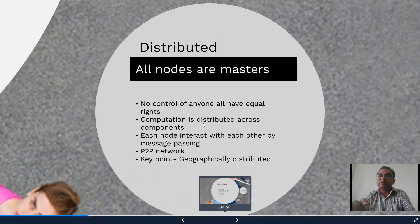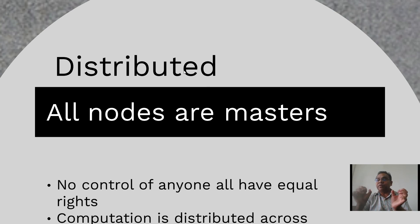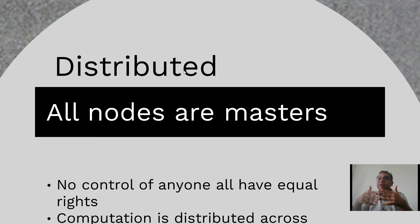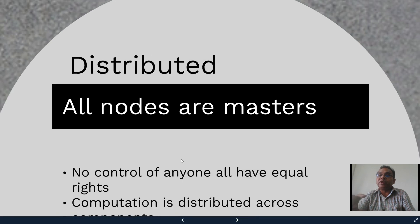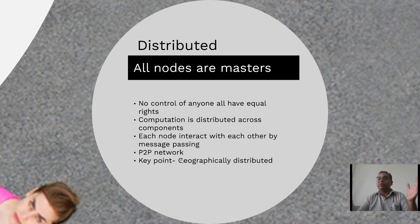In distributed computing, we say that all nodes are masters. There is no single server — every node is doing computation. The task is divided among all the nodes and all nodes hold a copy — that is the distributed ledger as used in blockchain, where every node was the master and every node had a copy of the ledger. Nodes communicate with each other by peer-to-peer messaging. There is no single control, no third-party involvement. It is geographically distributed — different nodes are at different geographical locations.